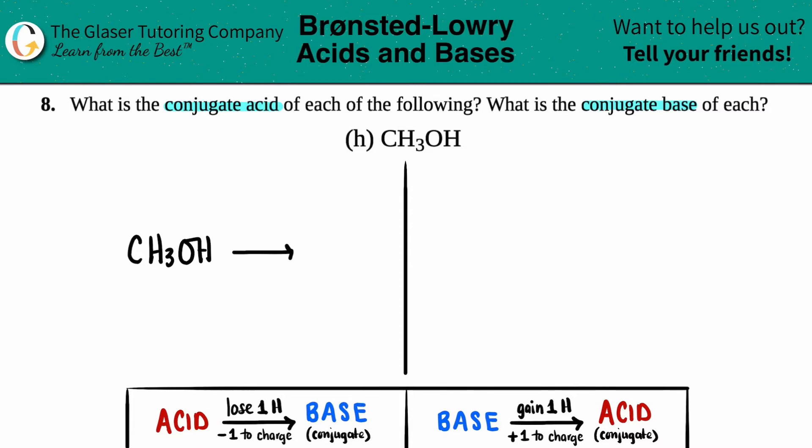Well, a conjugate base or a base is always one hydrogen less than its acid. So all I have to do is get rid of one of the hydrogens. But this one is a little bit tricky because I have hydrogens in two spots. Am I going to drop this three down to a two or am I just going to get rid of this hydrogen?